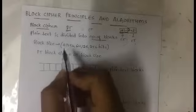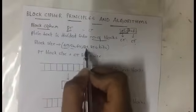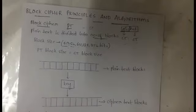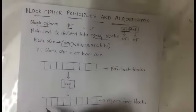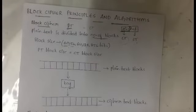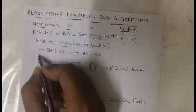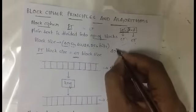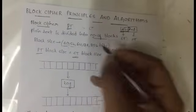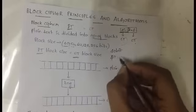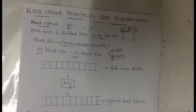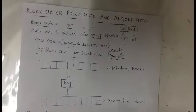Now, block size — each block can have a size of 40, 56, 64, 128, or 256 bits. Whenever we are dividing the blocks and converting plain text into cipher text, we must make sure that the plain text block size will always be equal to the cipher text block size. So if the block size of our plain text is 40 bits, then the corresponding cipher text block must also be 40 bits.